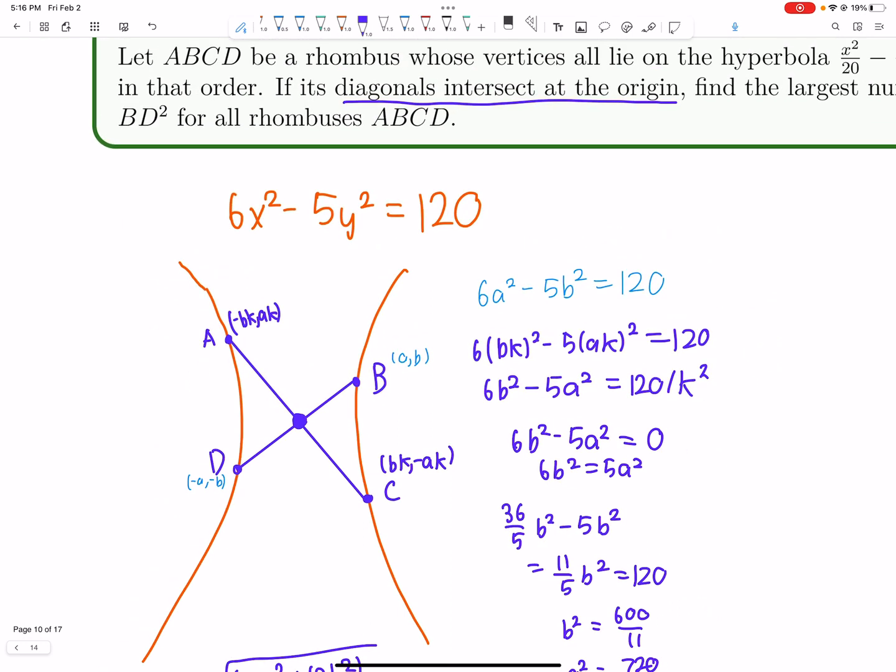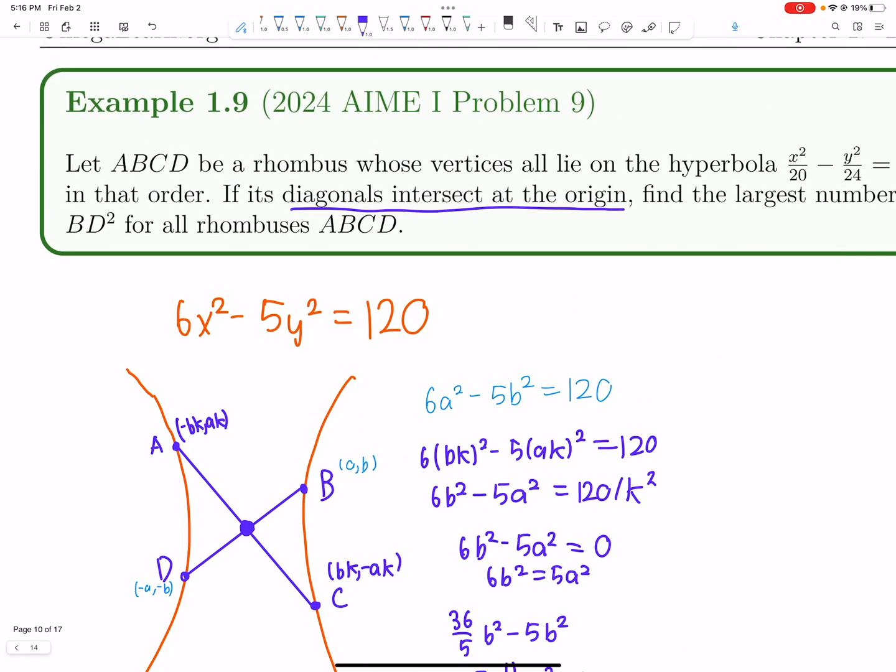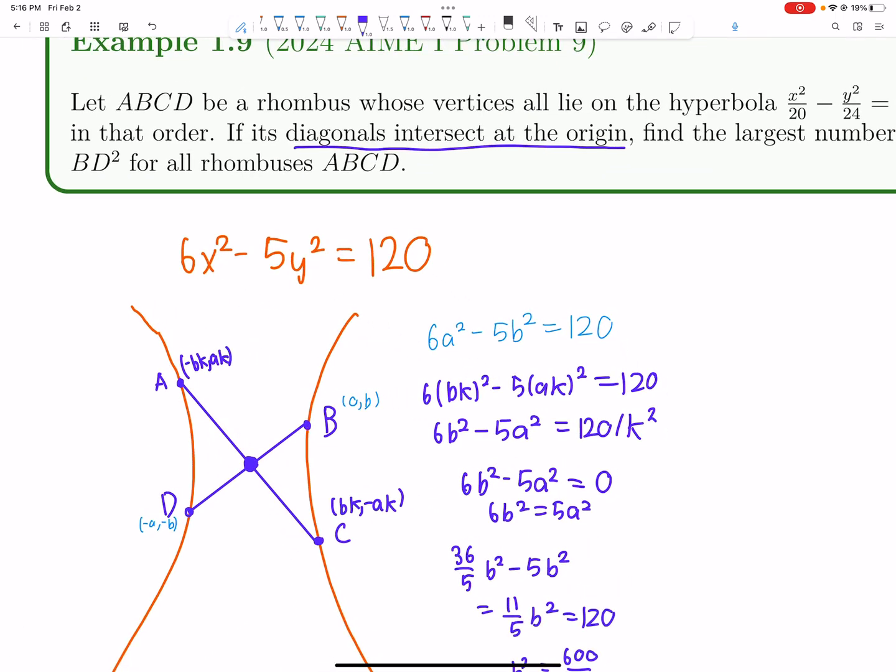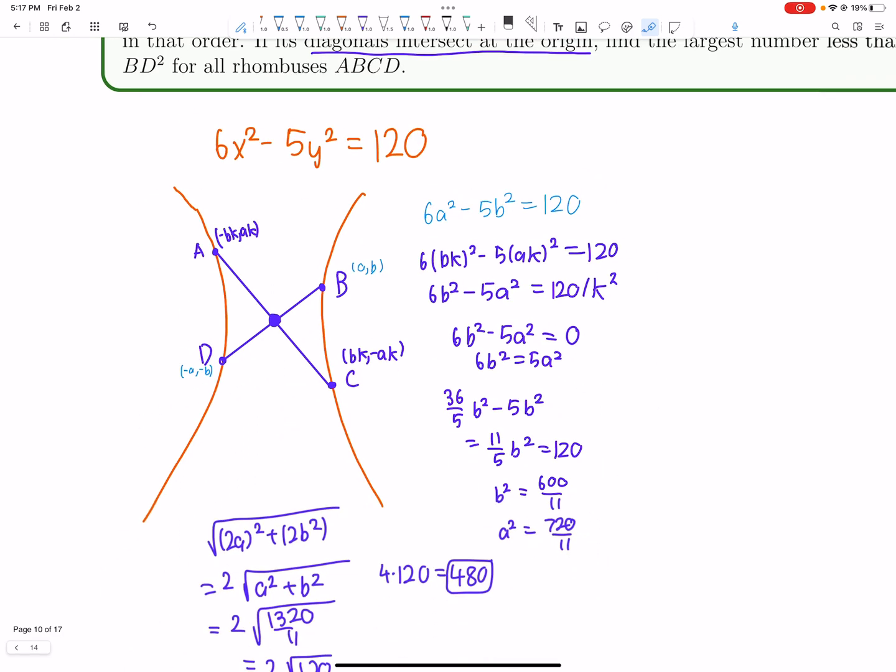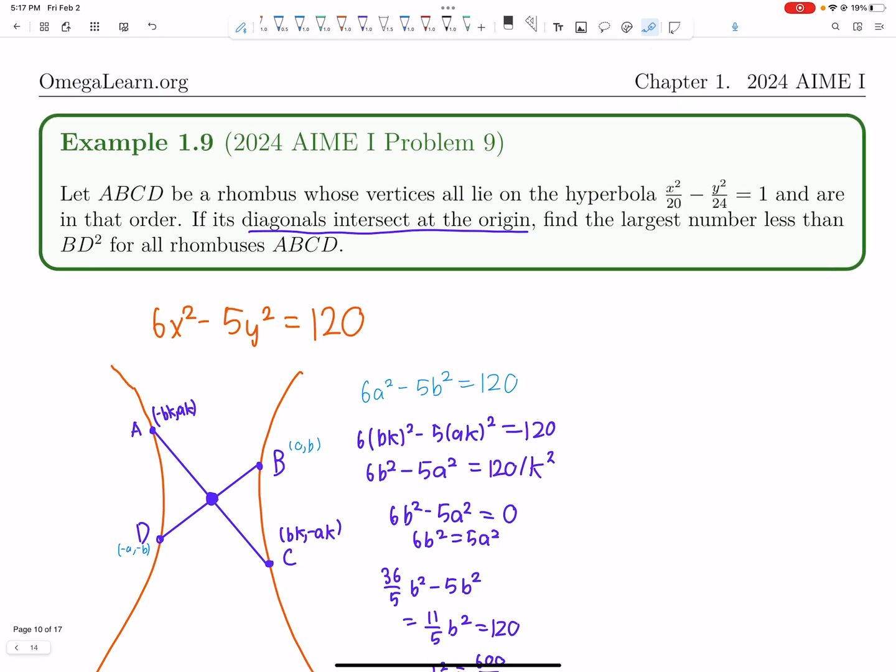The key is don't get scared by hyperbolas - they're just equations. Some use asymptote-based solutions, which work but aren't necessary. The insight is that as k approaches infinity, BD gets smaller and smaller, approaching the limit where 6b² - 5a² = 0. That's how we got our answer.